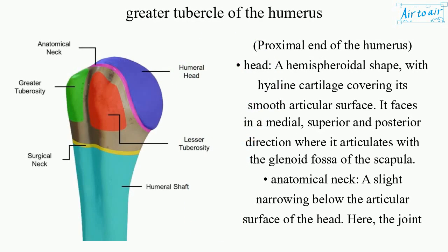At the proximal end of the humerus, the head has a hemispheroidal shape with hyaline cartilage covering its smooth articular surface. It faces in a medial, superior, and posterior direction, where it articulates with the glenoid fossa of the scapula. The anatomical neck is a slight narrowing below the articular surface of the head, where the joint capsule of the shoulder joint is attached.